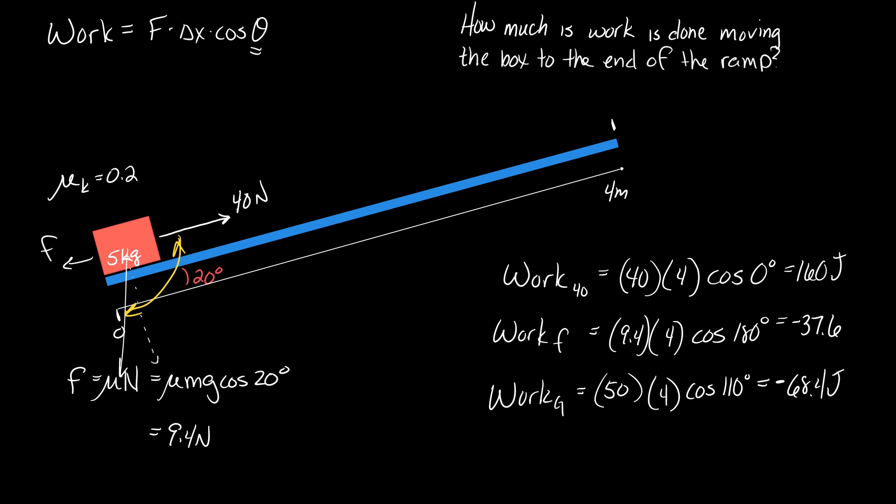All right. Now, you could have found the component of the weight down the ramp, which would be mg sine 20, and then find out how much work it does as it pushes the box up the ramp, and you will find it to be the exact same value. So there's more than one way to do this.